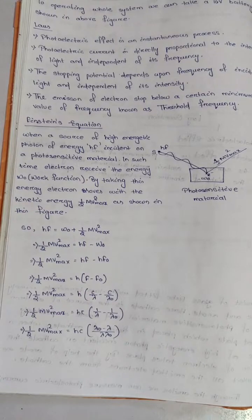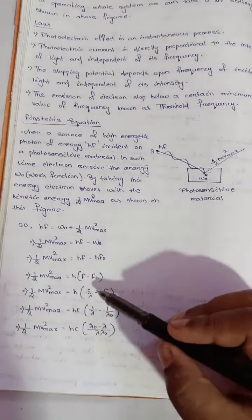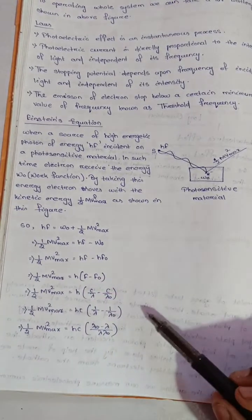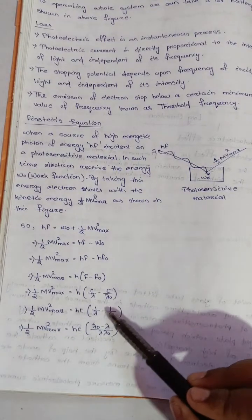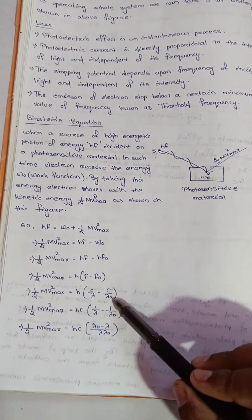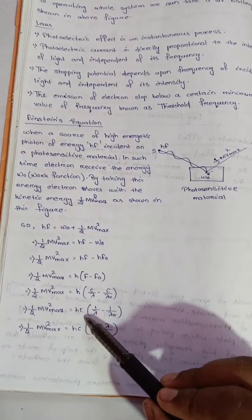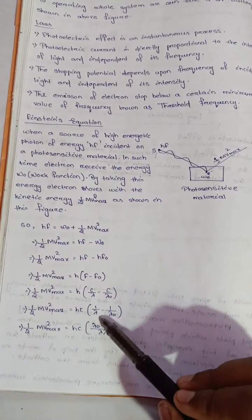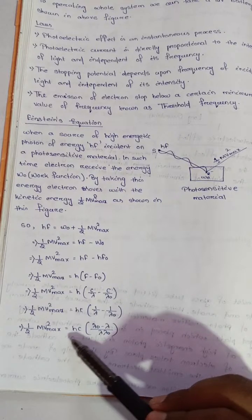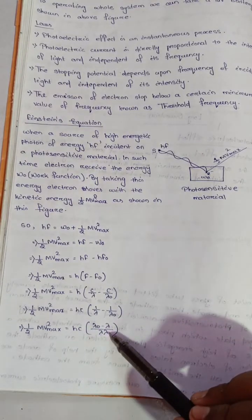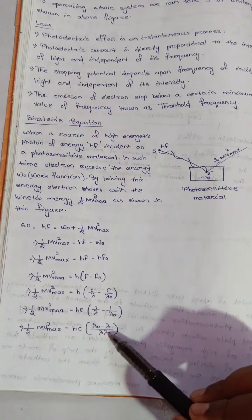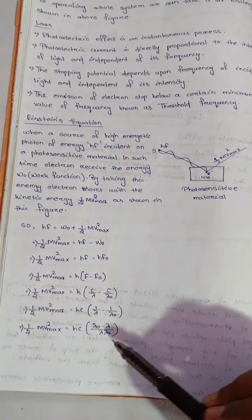Substituting frequency f = c/λ, we get: half mv² maximum = hc/λ − hc/λ₀, which equals hc(λ₀ − λ) divided by (λ · λ₀).